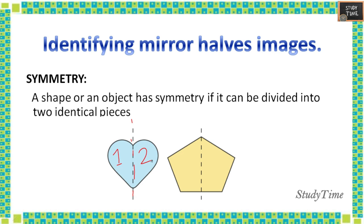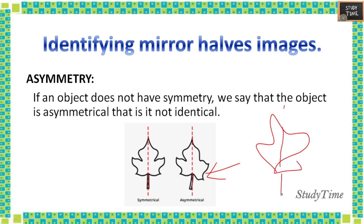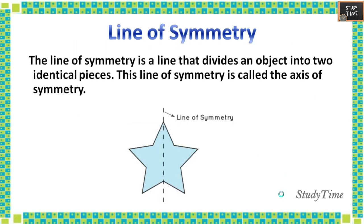Such shapes or objects are called symmetrical. Next we'll see asymmetry. If an object does not have symmetry, we say that the object is asymmetrical — that is, the parts are not identical when you divide it. When you divide this picture, you will not get identical parts, so they are called asymmetrical.